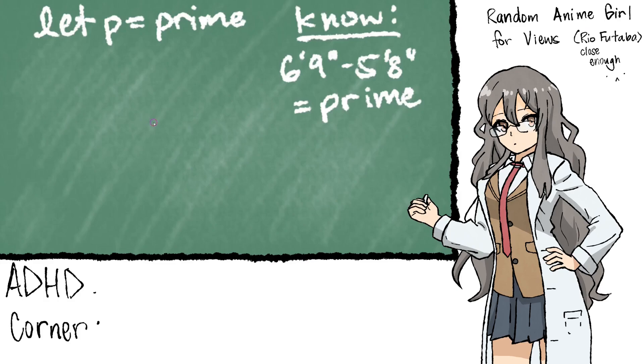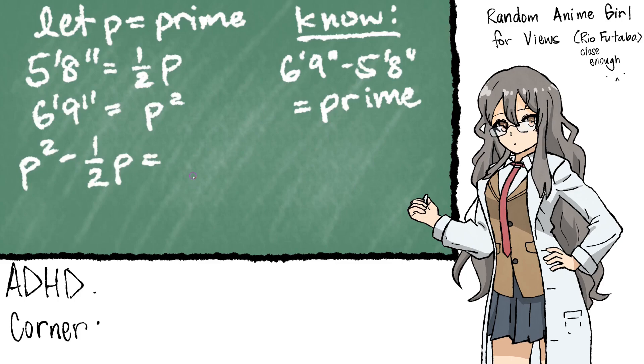Anyways, semi means half, so we can replace 5'8" with half prime, or 1/2 p. And of course, we'd do the same with square prime, which is prime squared. And from earlier, we know that this expression is equal to prime. So, solving for prime, we'd see that prime equals 3/2.